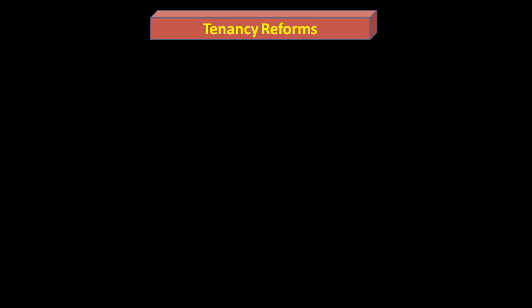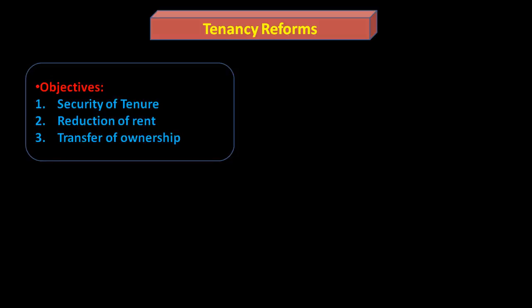Moving ahead, let us look at tenancy reforms. There are three aims: first, security of tenure to the tenant; second, that rent should be reduced and fair; and third, the ultimate goal is transfer of ownership from the Zamindar or land owner to the tenant who is actually tilling the soil. This concept is called land to the tiller.